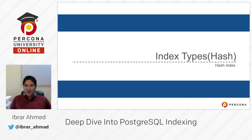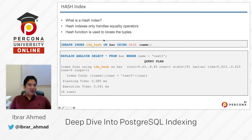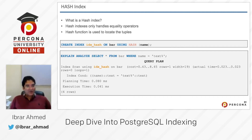Our next topic is hash index, which is another type of index in PostgreSQL. Hash index only handles the equality operator — unlike B-tree index, which can handle less than, greater than, and equality operators. Hash index can only handle equality because it uses a hash function, and with a hash function you cannot use less than or greater than.